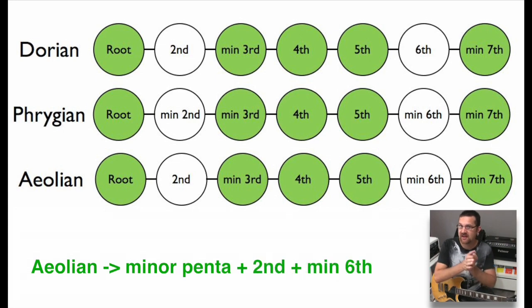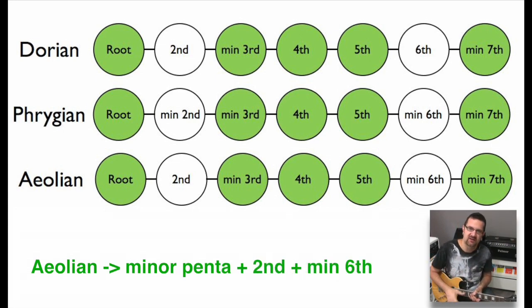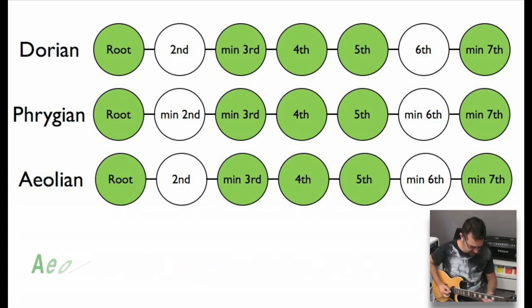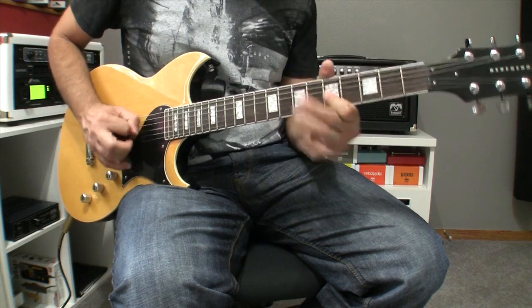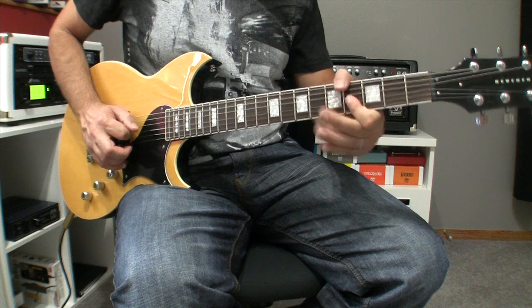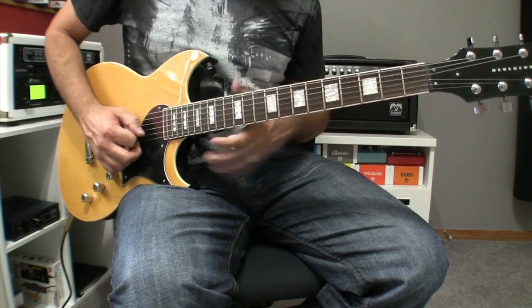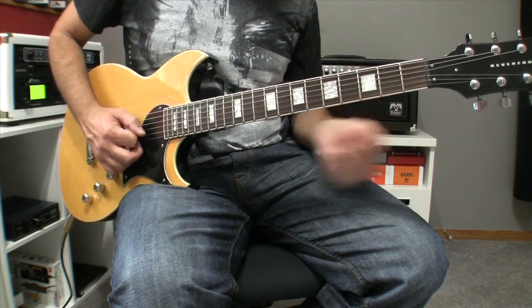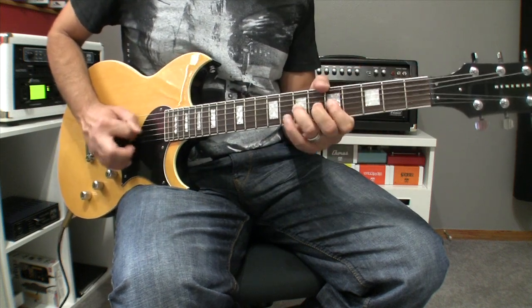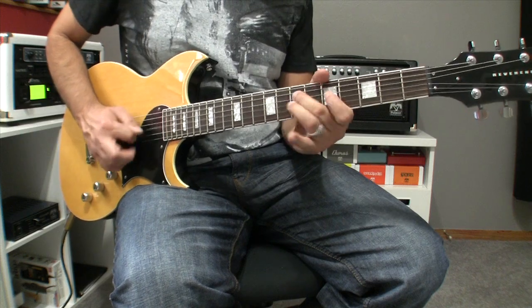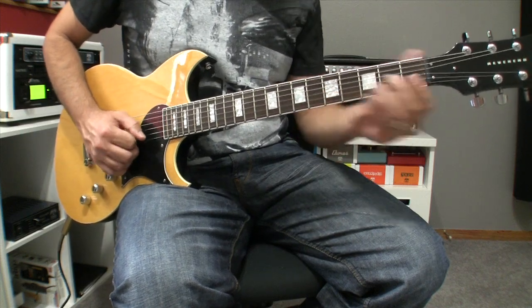The Aeolian is made of a minor pentatonic scale plus a major second and a minor sixth. Here is how that sounds — I'll focus on the minor pentatonic and land on the major second, then do the same and land on the minor sixth. And that's how I speak the Aeolian language.